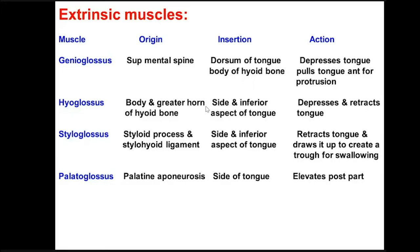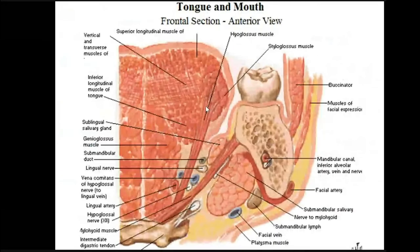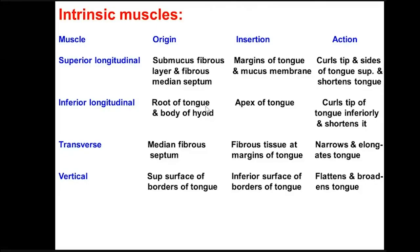Palatoglossus arises from the palatine aponeurosis and passes to the side of the tongue — elevates the posterior part of the tongue. The intrinsic muscles are four: the superior longitudinal runs in the submucous fibrous layer from the median septum to the margins and mucous membrane, curving the tip of the tongue superiorly and shortening it. The inferior longitudinal runs from root to apex, curving the tip inferiorly and shortening it. The transverse runs from the median fibrous tissue to the margins of the tongue — narrows and elongates the tongue. The vertical runs from superior to inferior borders of the tongue — flattens and broadens the tongue.